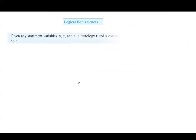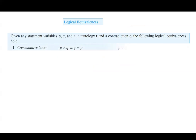Let's take a look at some logical equivalences and see how we can use them. Given any statement variables like P, Q, R, a tautology T, and a contradiction C, the following logical equivalences are always true. First, commutative laws: P AND Q is always equivalent to Q AND P — the order is not important. Similarly, P OR Q is always equivalent to Q OR P.